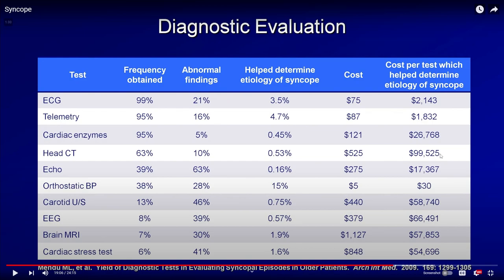That video shows the cost-effectiveness of each test for determining the cause of syncope. An EKG costs about $2,000 per diagnosis, and telemetry is also cost-effective. Orthostatic blood pressure is only obtained 38% of the time but should be obtained in 100% of patients — at just $30 to diagnose a cause, it's extremely cost-effective. Echos are slightly less cost-efficient at around $17,000. Head CTs, carotid ultrasounds, EEGs, MRIs, and cardiac stress tests are not routinely indicated unless there is a specific clinical concern.